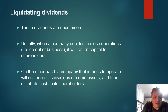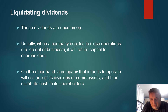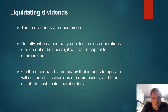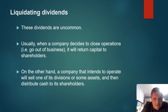Liquidating dividends are very uncommon. Usually, when a company decides to close operations and go out of business — not go bankrupt, but go out of business — it will return capital to shareholders. On the other hand, a company that intends to continue operating may sell one of its divisions or some assets, and then distribute cash to its shareholders.